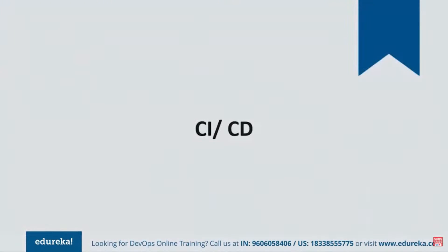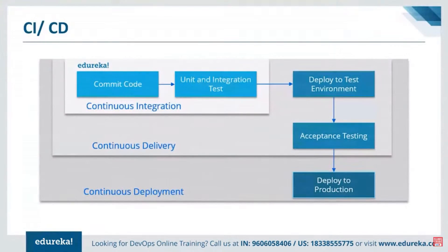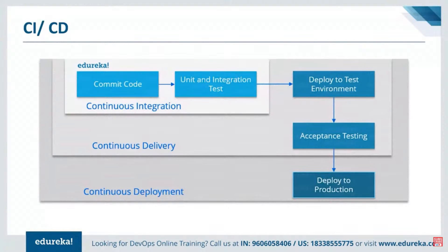Let's understand continuous integration, continuous delivery, and continuous deployment — three concepts that many people confuse. Continuous integration begins the moment a developer commits a change: the CI tool like Jenkins pulls the code, prepares a build, and performs unit and integration testing. Importantly, at this stage the application is not deployed onto any server — not even for functional or regression testing.